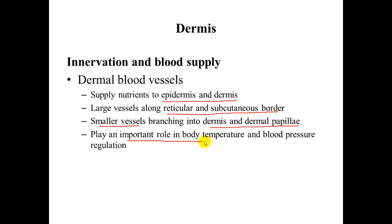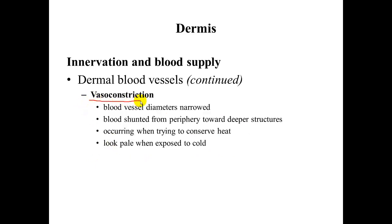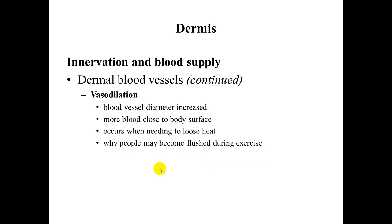These vessels play a very important role in body temperature and blood pressure regulation — they can be vasodilated or vasoconstricted. In vasoconstriction, the blood vessel narrows its diameter and blood is shunted from the periphery towards deeper structures; this occurs when conserving heat, which is why you look pale in the cold. In vasodilation, the blood vessel diameter increases, shunting blood close to the body surface to lose heat, which is why we appear flushed during exercise.